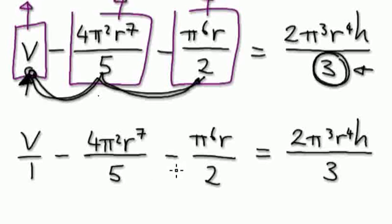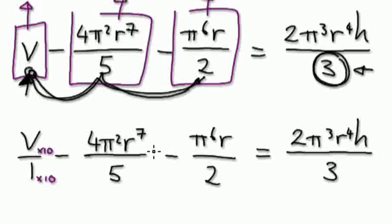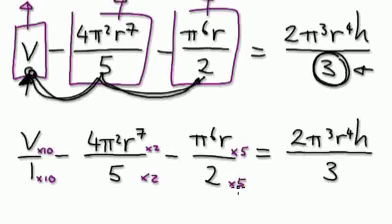In order for us to merge, all the denominators have to be the same. Here's a trick: times this one top and bottom by 10, this one top and bottom by 2, and then times this one top and bottom by 5. Later on you will see that all the denominators will be the same.